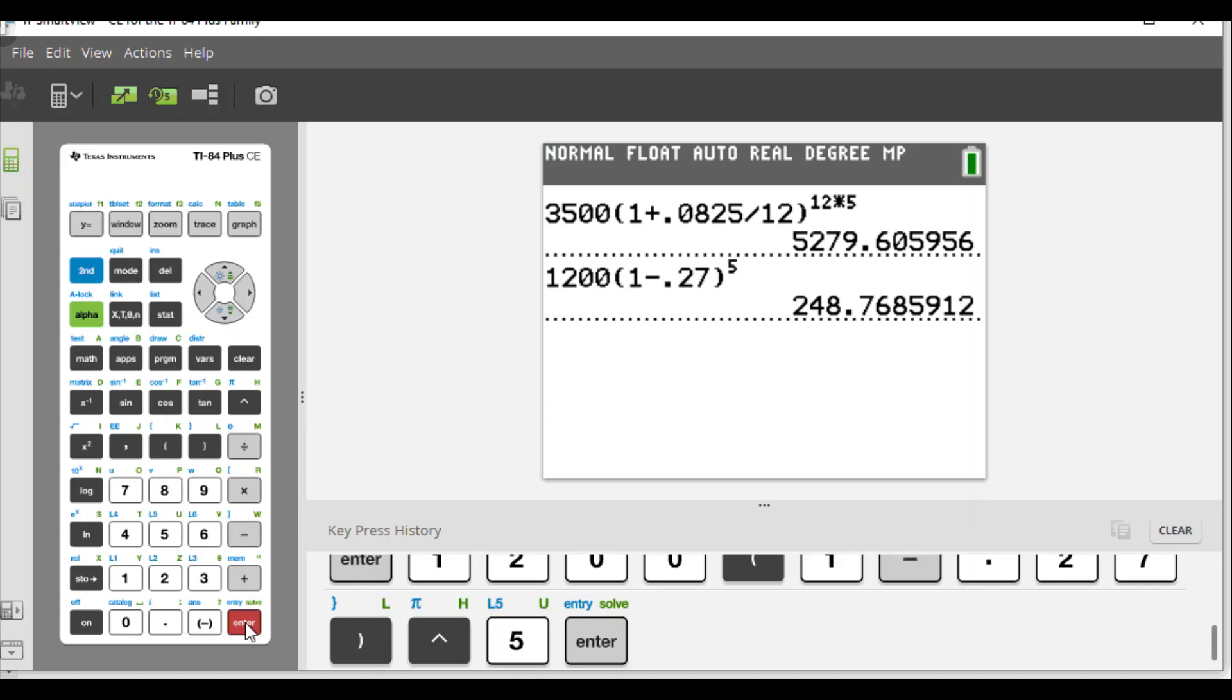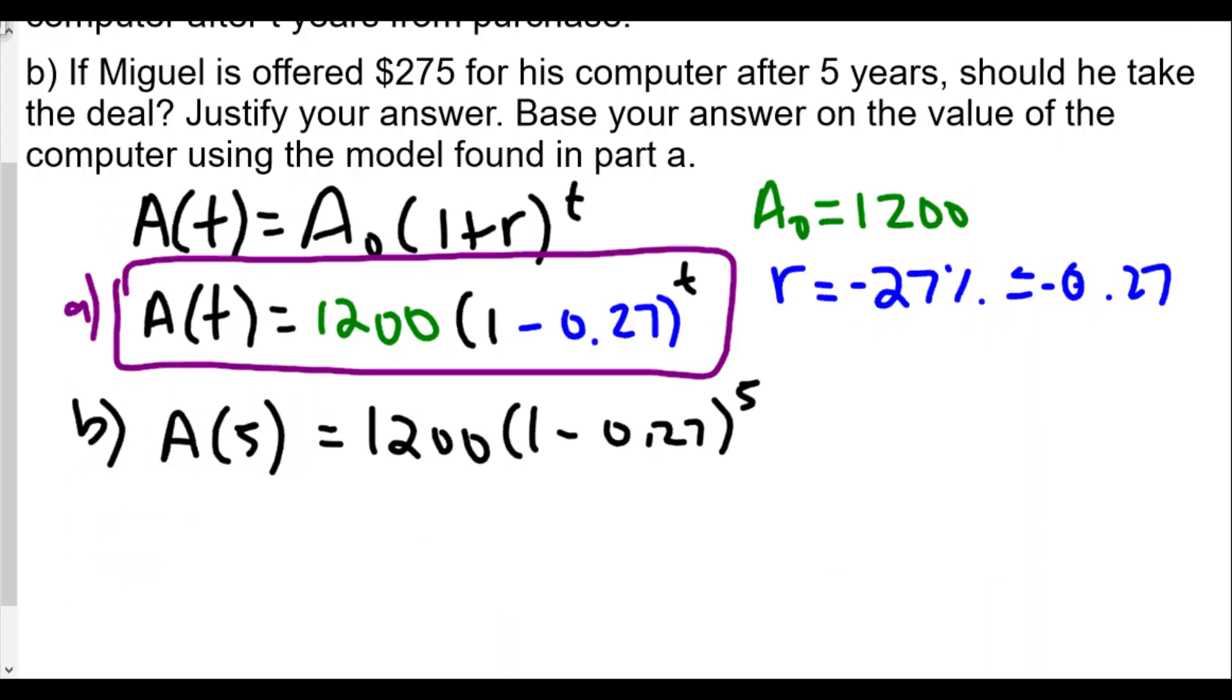We get a value of $248.77. That's what Miguel is estimating his computer to be worth. A(5), the value of the computer after five years, will be about $248.77. Someone is offering him $275. Should Miguel take the $275? The answer is yes, because 275 is greater than $248.77.